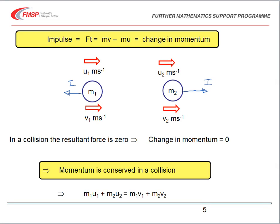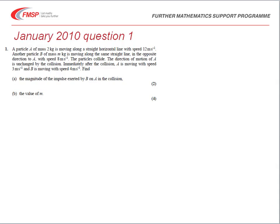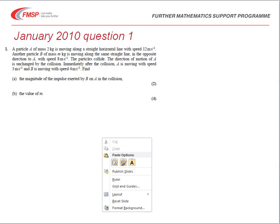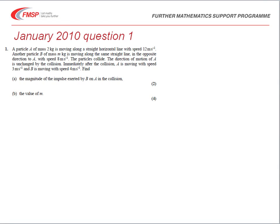We'll now illustrate those ideas by looking at some exam questions. First, a question from the January 2010 paper. Particle A has mass 2 kilograms and is moving in a straight horizontal line with a speed of 12 meters per second. Another particle B of mass M kilograms is moving in the same straight line in the opposite direction with speed 8 meters per second. The particles collide. The direction of motion of A is unchanged, and after the collision A moves at 3 meters per second and B at 4 meters per second. We're asked to find the magnitude of the impulse exerted by B on A, and the value of M.